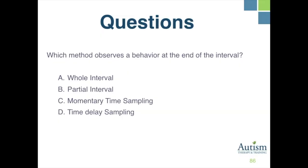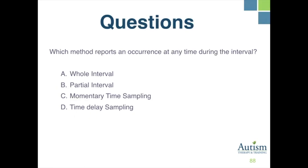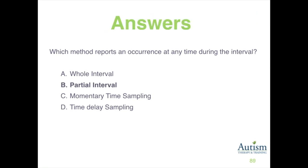Which method observes a behavior at the end of the interval? A, whole interval; B, partial interval; C, momentary time sampling; or D, time-delay sampling? The correct response is C, momentary time sampling. Which method reports an occurrence at any time during the interval? A, whole interval; B, partial interval; C, momentary time sampling; or D, time-delay sampling? The correct response is B, partial interval.